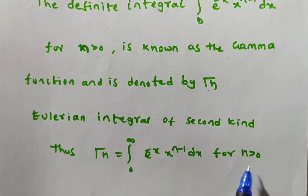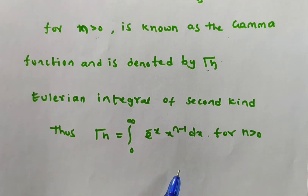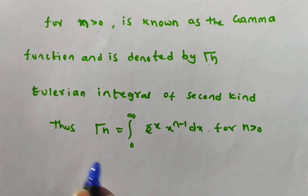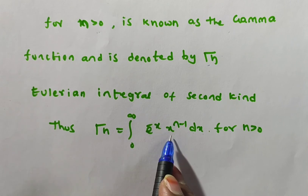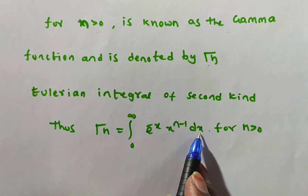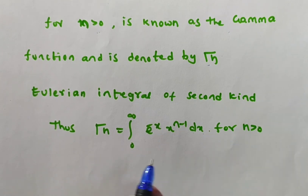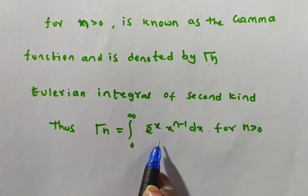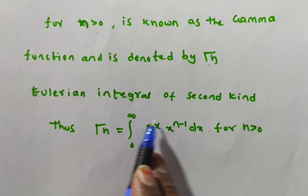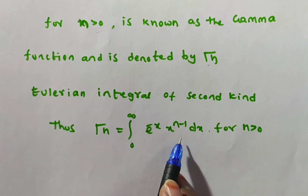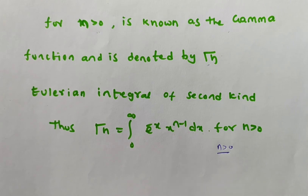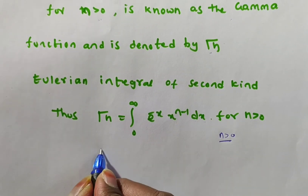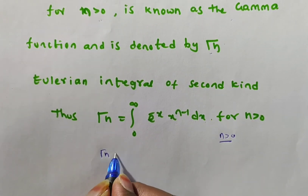This integral is valid for n greater than 0 only. In this case, the integral will be convergent for n > 0. Remember: n must be greater than 0. For negative values of n, the integral is not convergent.